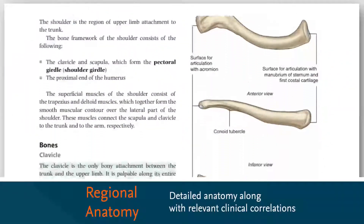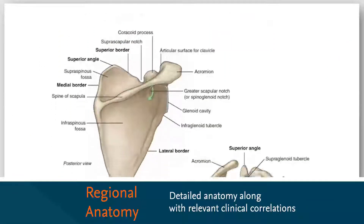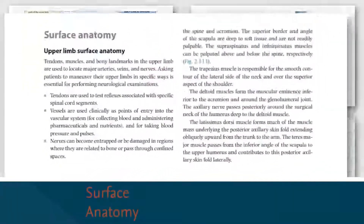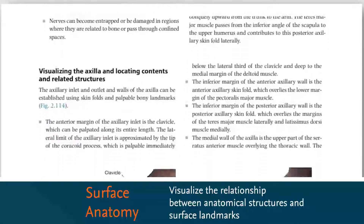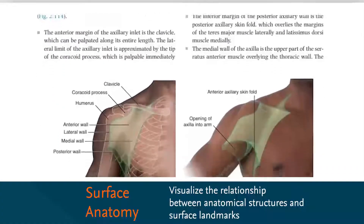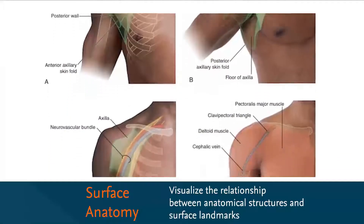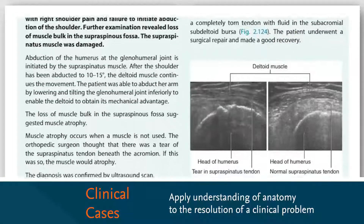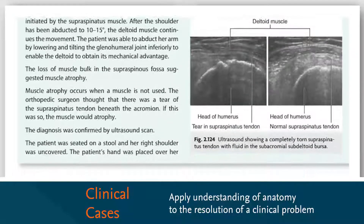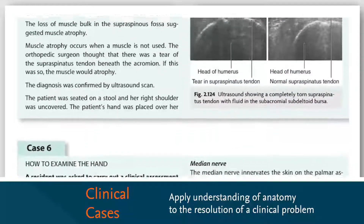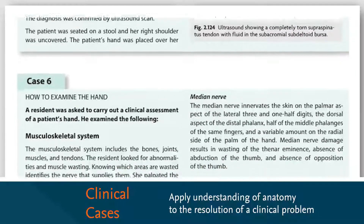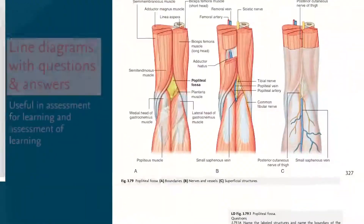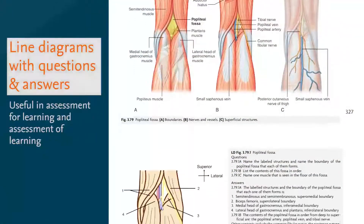The regional anatomy section provides more detailed anatomy along with a substantial amount of relevant clinical correlations. Surface anatomy assists in visualizing the relationship between anatomical structures and surface landmarks with practical applications. The final section of clinical cases represents the third level of clinical material in the book, wherein a clinical problem is described and a step-by-step process of questions and answers leads the reader to the resolution of the case.